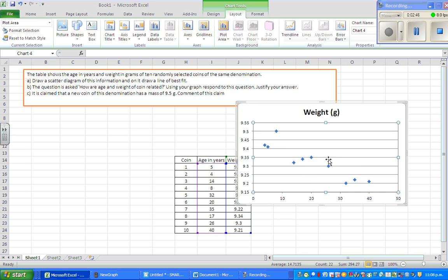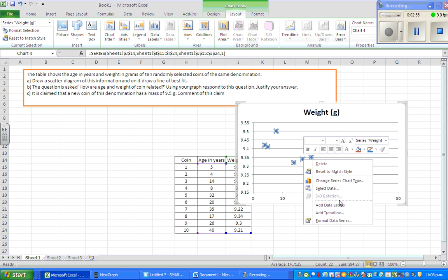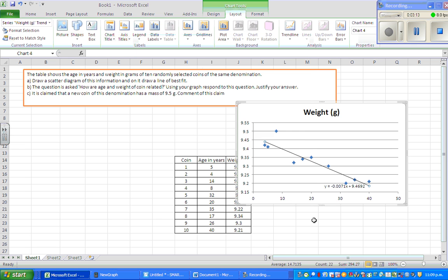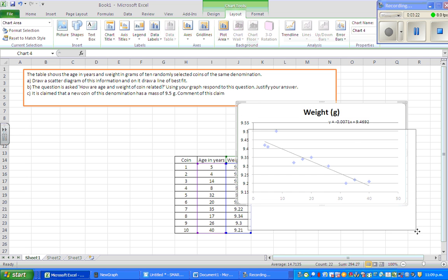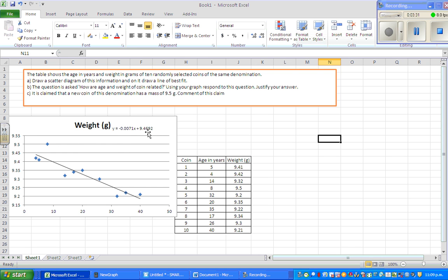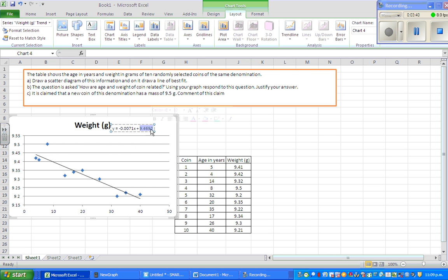Now if you want to draw the line of best fit, you click on any one of the points. If you click on any of those points, you have this box coming up. And if you click on add trend line, you'll have this box. And this is a linear trend. And we want to write the equation. So display equation on the chart. So if you click on that and close it. So here is the equation. So that is negative. Let me make this bigger. So the gradient is negative 0.007 or you can say this is negative 0.07. So the gradient is negative 0.07 and the y intercept is 9.5.